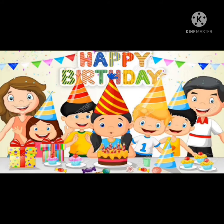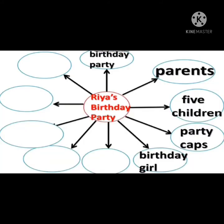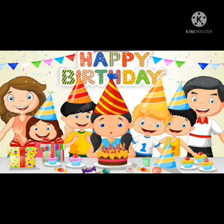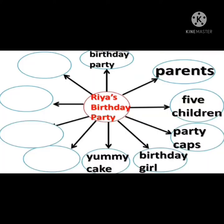We can see a cake here — a yummy cake. And how many candles are on it? There are six candles on the cake. You can count them to assume how old she is. So there are six candles, and from that we can tell it is her sixth birthday.